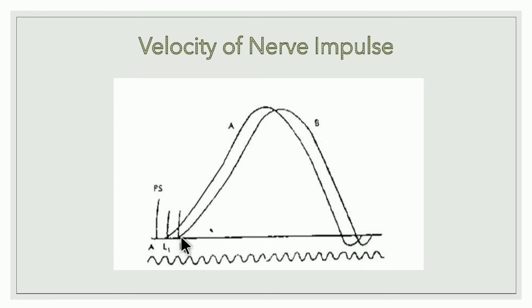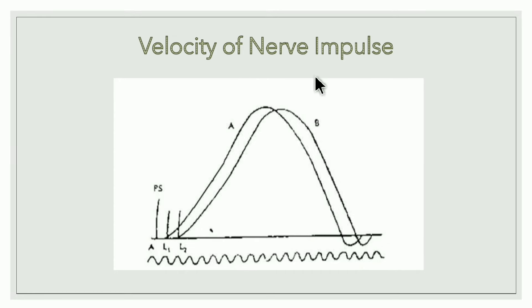The B curve has a longer latent period because the impulse takes time to travel through the nerve before stimulating the muscle. The A curve has a shorter latent period because we are stimulating the nerve very close to the muscle. The difference in latent periods of B and A gives the time factor. With time and distance (nerve length) known, we can calculate the velocity of nerve impulse.